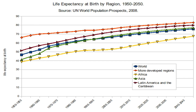In the Bronze Age and the Iron Age, LEB was 26 years; the 2010 world LEB was 67.2 years. For recent years, in Swaziland LEB is about 49, and in Japan it is about 83. The combination of high infant mortality and deaths in young adulthood from accidents, epidemics, plagues, wars, and childbirth, particularly before modern medicine was widely available, significantly lowers LEB. But for those who survive early hazards, a life expectancy of 70 would not be uncommon. For example, a society with a LEB of 40 may have few people dying at precisely 40; most will die before 30 or after 55.